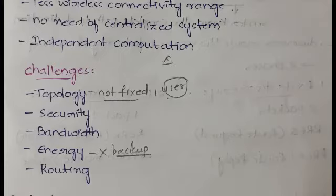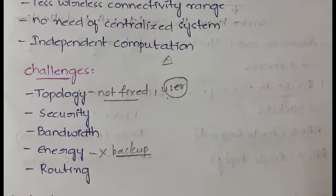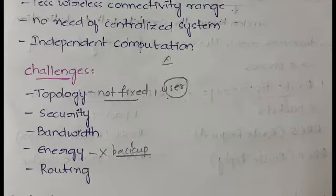The fifth challenge is routing — finding a path between nodes from source to destination. Since nodes keep moving, it is not possible to establish a stable link or a proper path between source and destination. So routing in MANET is quite difficult. To summarize, the challenges of MANET are: topology, security, bandwidth, energy, and routing.